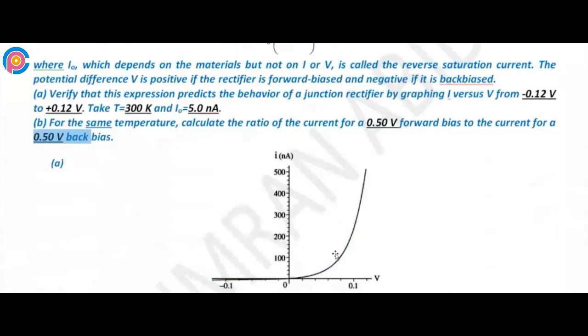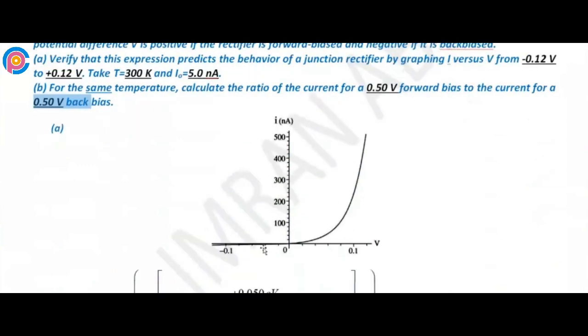For graphing, we know that the graph can represent from plus V to negative V. You can see if you're going in the forward direction versus the reverse direction, the behavior changes significantly across the barrier.